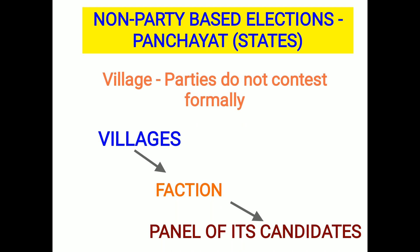A faction is a group within a larger group that has different ideas and opinions from the rest of the group. In the same way, villages get split into more than one faction, and each faction puts up a panel of its candidates for the election. This is essentially what a party does. That is why we see more political parties in different countries of the world — whether the country is small or big, old or new, developed or developing. This is what the non-party based election system demonstrates.